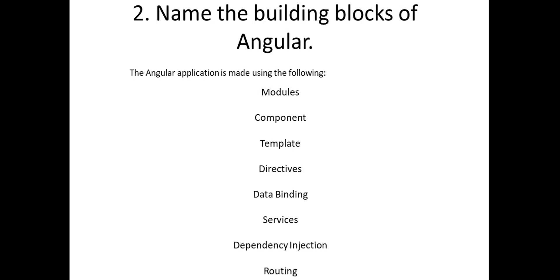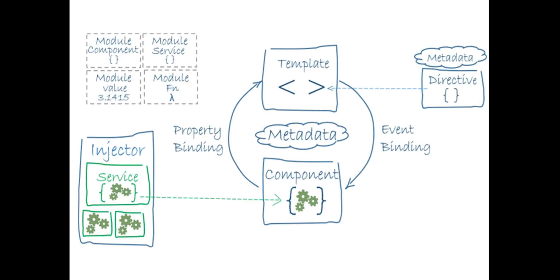Modules, templates, directives, data binding, services, dependency injection, and routing — these are the building blocks of Angular. This is the architecture of Angular, and it is the most important thing to understand. Basically, what we will be creating are components — we will be creating many small components.